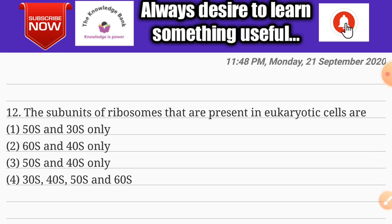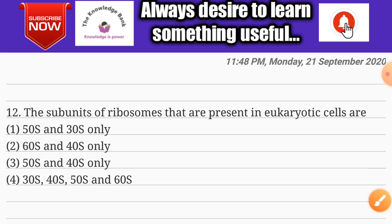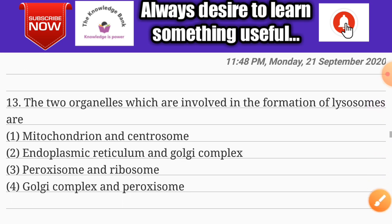Question number twelve: the subunits of ribosomes present in eukaryotic cells are — options are 50S and 30S only, 60S and 40S only, 50S and 40S only, and 30S, 40S, 50S, and 60S. The correct answer is option two: 60S and 40S only.